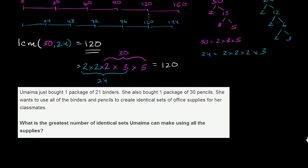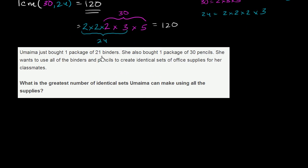Now let's do one more of these. Umama just bought one package of 21 binders and a package of 30 pencils. She wants to use all of the binders and pencils to create identical sets of office supplies for her classmates. What is the greatest number of identical sets Umama can make using all of the supplies? The fact that we're talking about greatest is a clue that it's probably going to be dealing with greatest common divisors. We want to divide these both into the greatest number of identical sets.